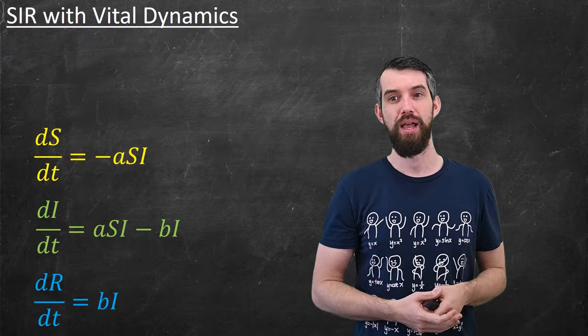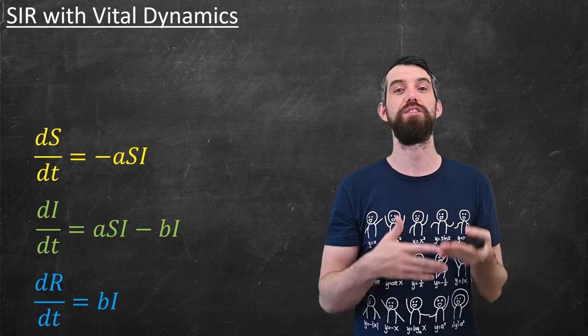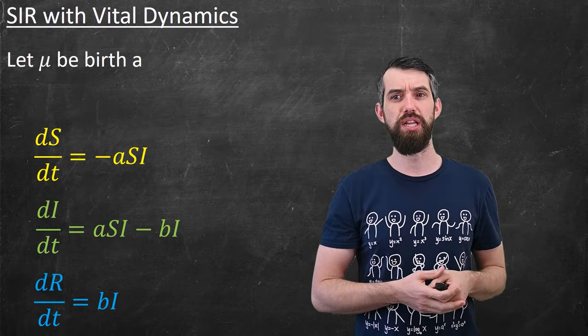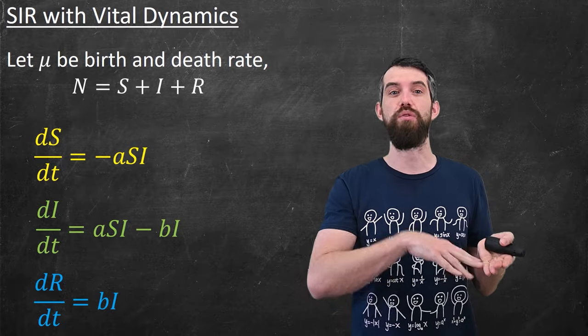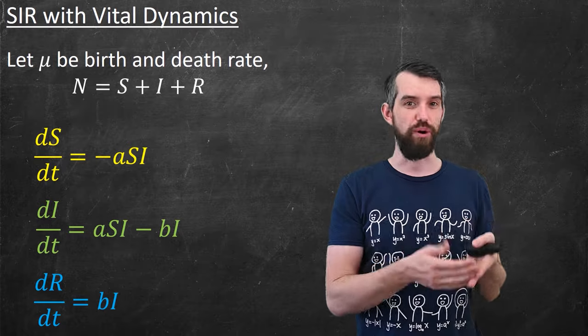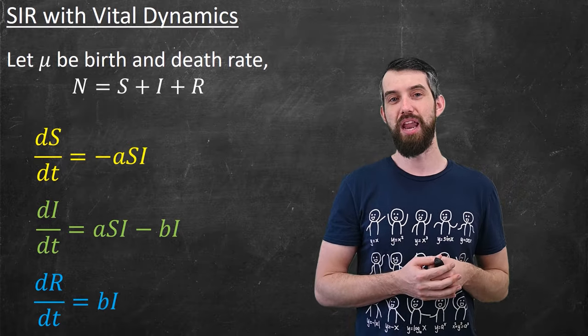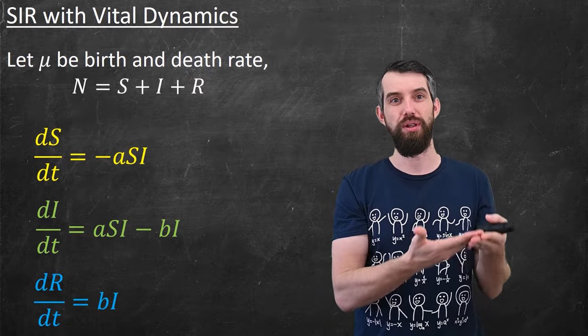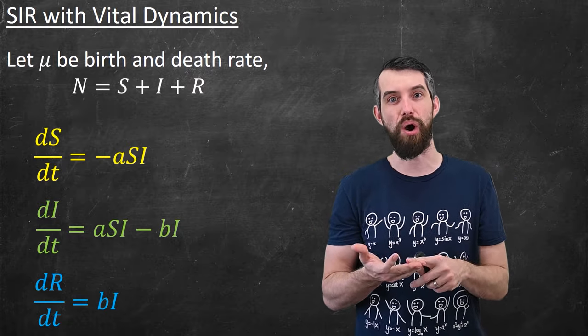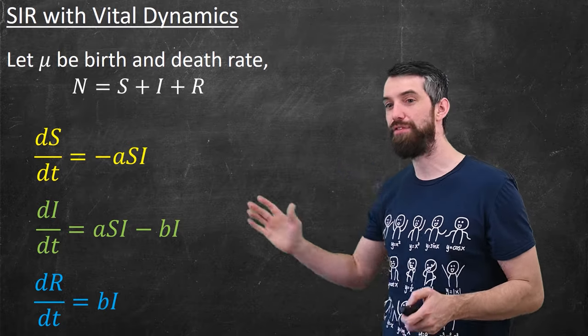Well, consider the following. This model is called the SIR model with vital dynamics. Vital dynamics is this new piece we're going to add in. And I'm going to give a piece of terminology here. I'm going to let mu be the birth rate, or the rate at which people are passing away. For simplicity here, I'm going to actually imagine the birth rate and the death rate is the same, so I'm sort of a constant population, if you will. And then I will refer to the total number of people, people in all three categories, the S plus the I plus the R as being equal to the value of n. Okay, so now I'm going to modify my equations and get the following.